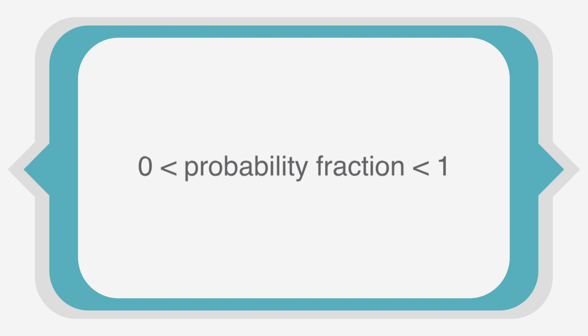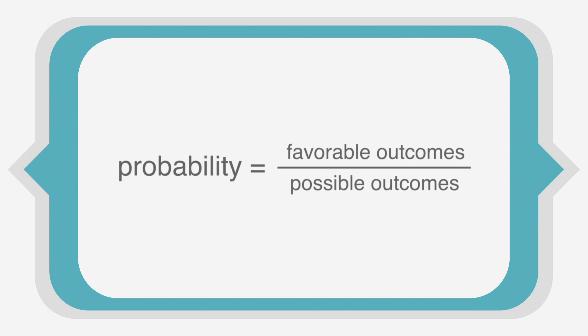When we're calculating probability, we do it with a simple formula. Probability is equal to the number of favorable outcomes divided by the number of possible outcomes.